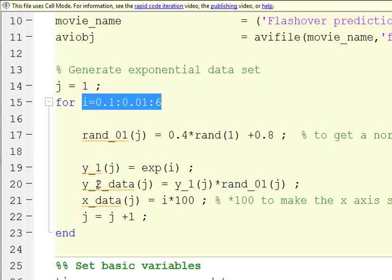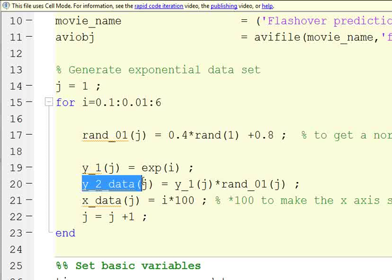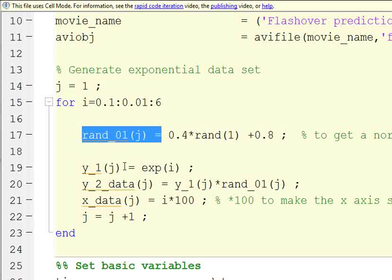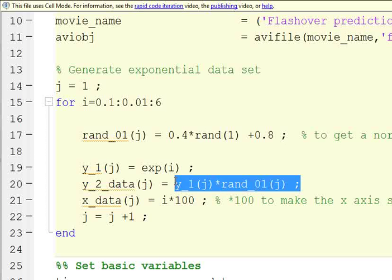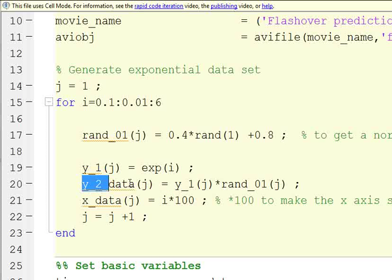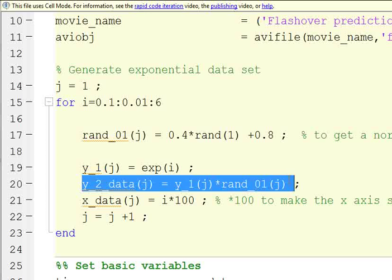And then we're going to take our data and multiply it by this random variable. So we take our exponential curve that we generate here, multiply it by a random number, and then create a random set of numbers that are close to an exponential curve.